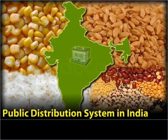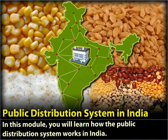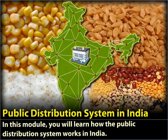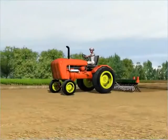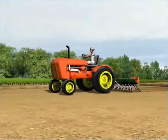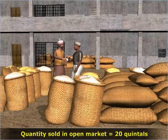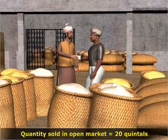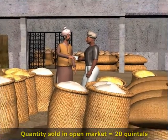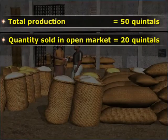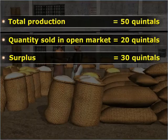Public Distribution System in India. In this module, you will learn how the public distribution system works in India. After months of hard work, Ramu produced 50 quintals of rice and immediately sold 20 quintals in the open market at a good price. Now, the remaining 30 quintals of rice is a surplus.